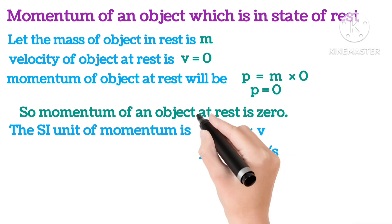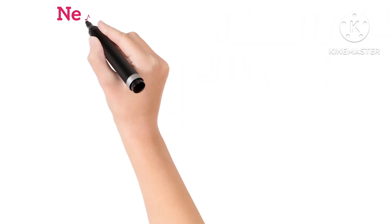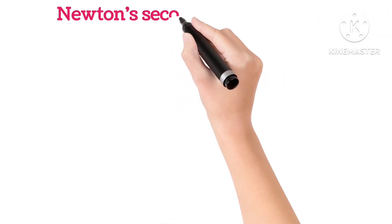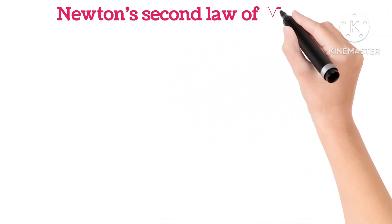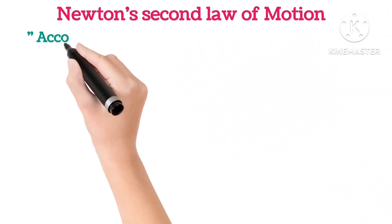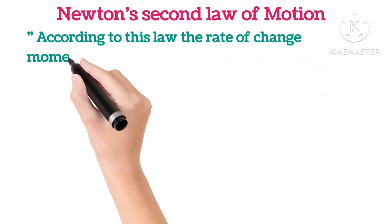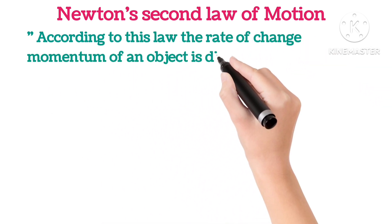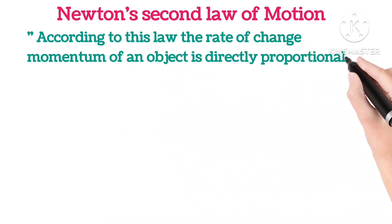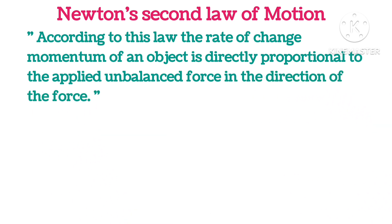Newton's second law of motion. According to this law, the rate of change of momentum of an object is directly proportional to the applied unbalanced force in the direction of the force.